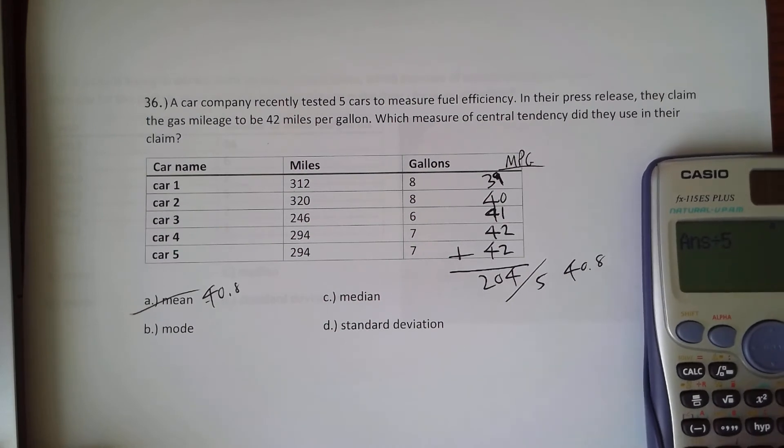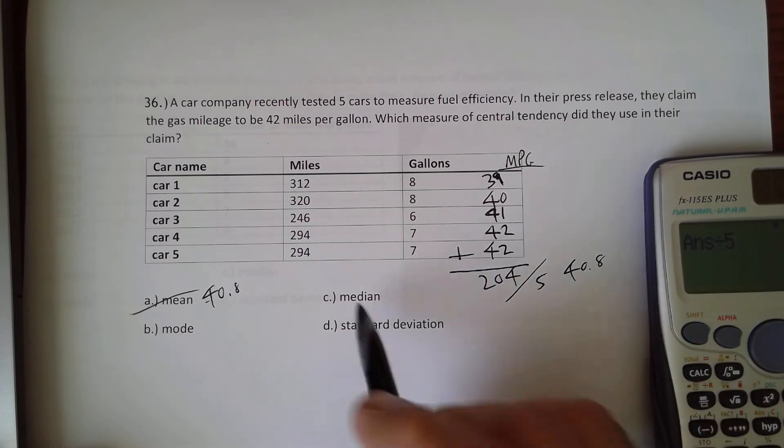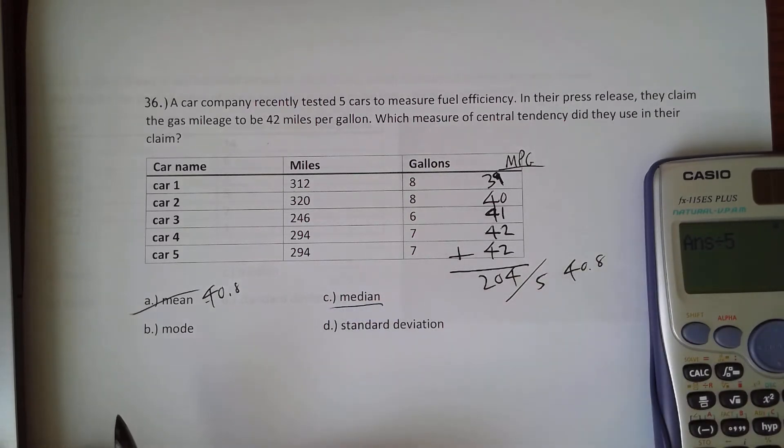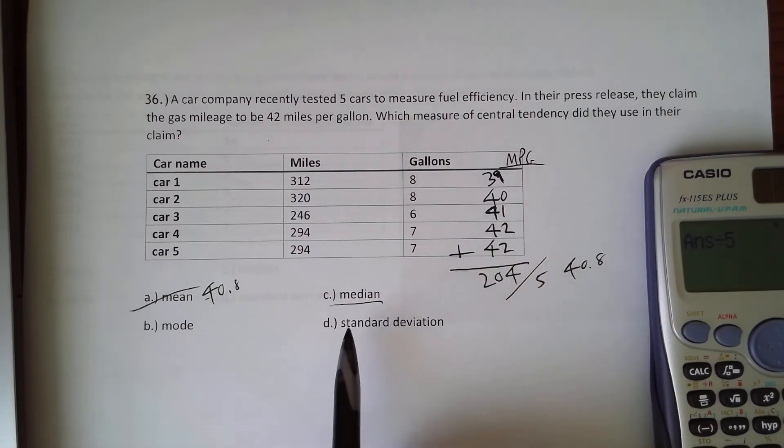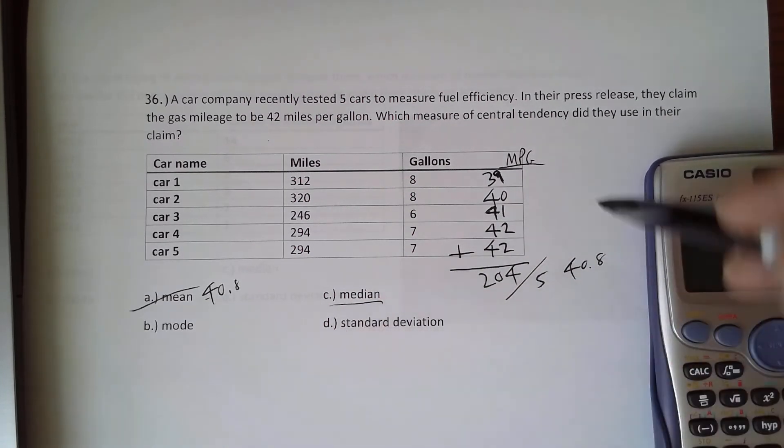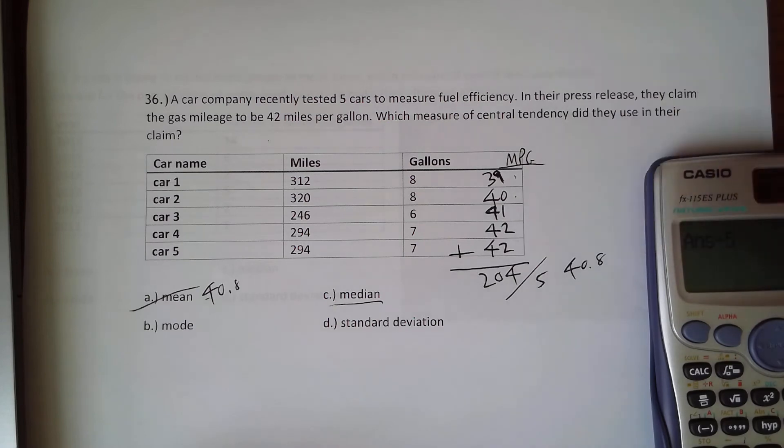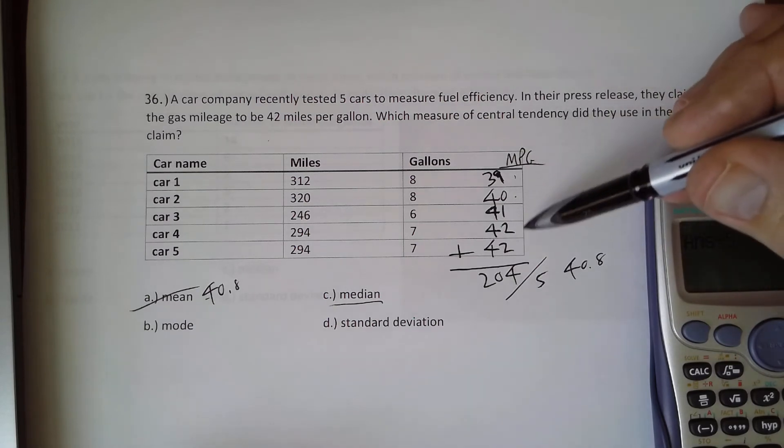So let's look at the median next. To find the median, we're looking at the one directly in the middle. So to find that, you're going to want to line them up, your MPGs, from smallest to largest in order. Well, we're lucky it actually works out that way. If not, you would need to rearrange them.